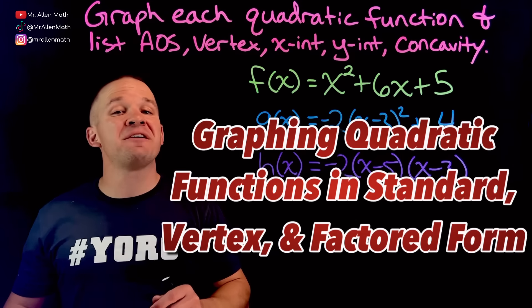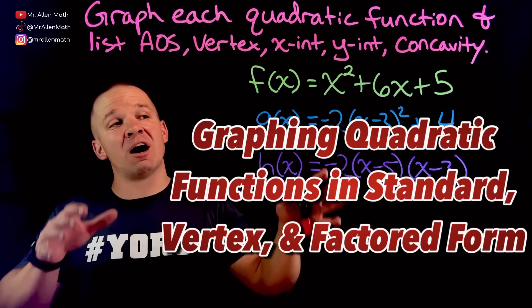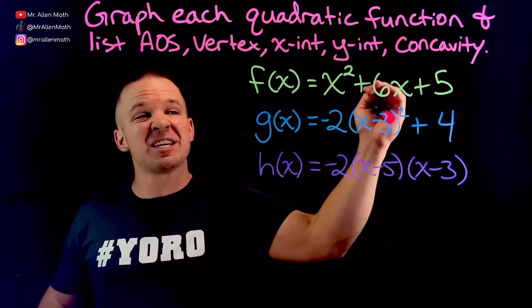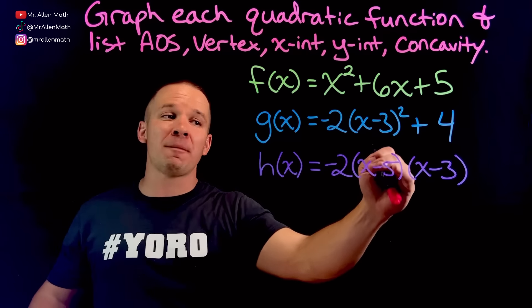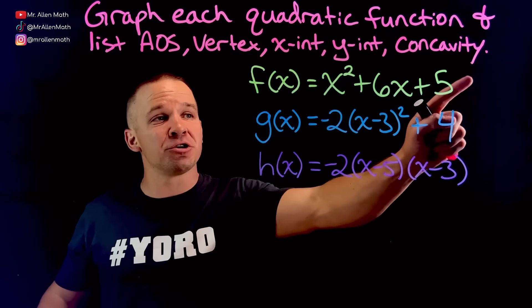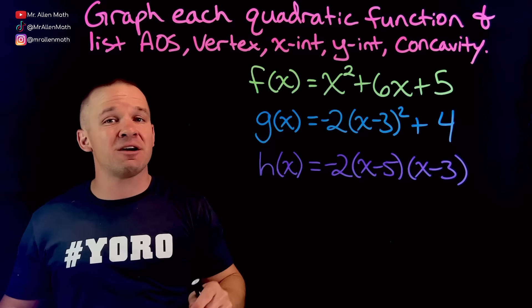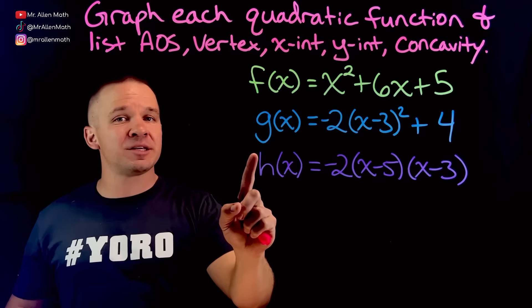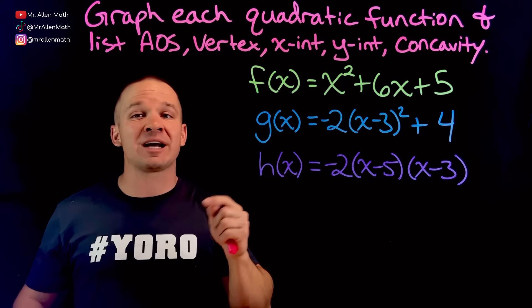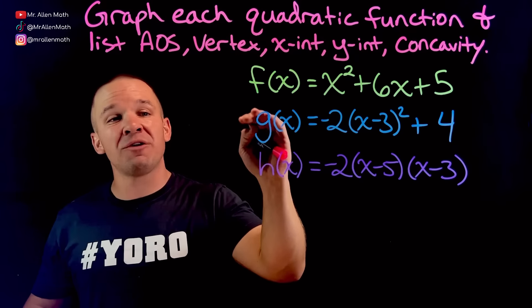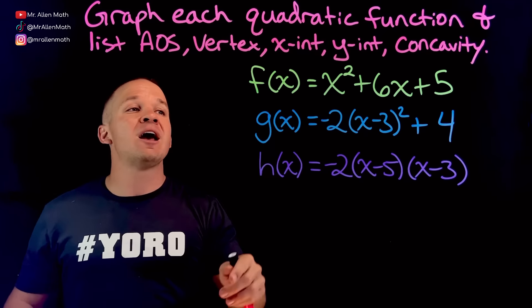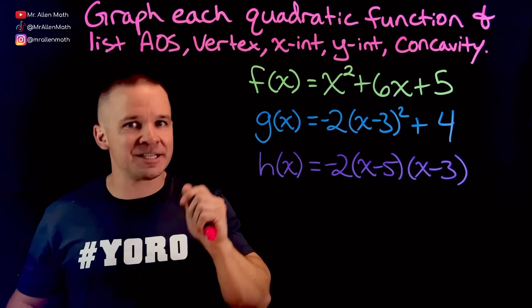What's happening? Mr. Allen here with a video on graphing quadratic functions in three different forms: standard form, vertex form, and factored form. We're going to list key features for each one of these three functions as well as graphing. Before we get started, I've got a question for you to either answer now or at the end of the video in the comments: which one of these three forms do you find the easiest to graph, and why? Now let's get graphing.